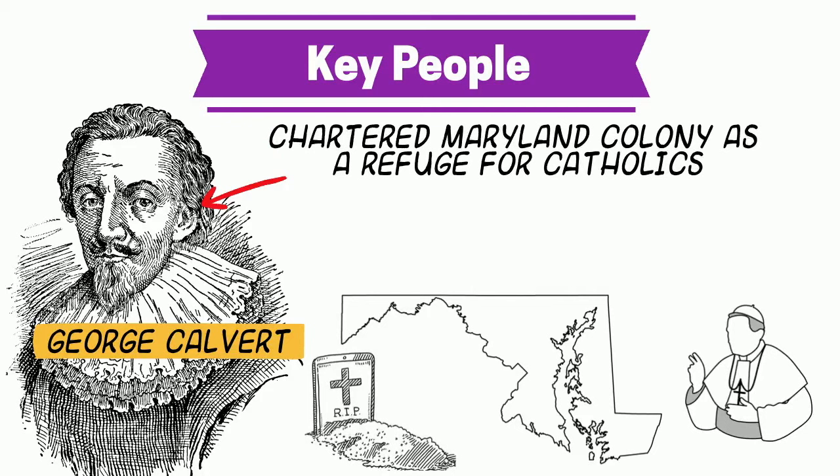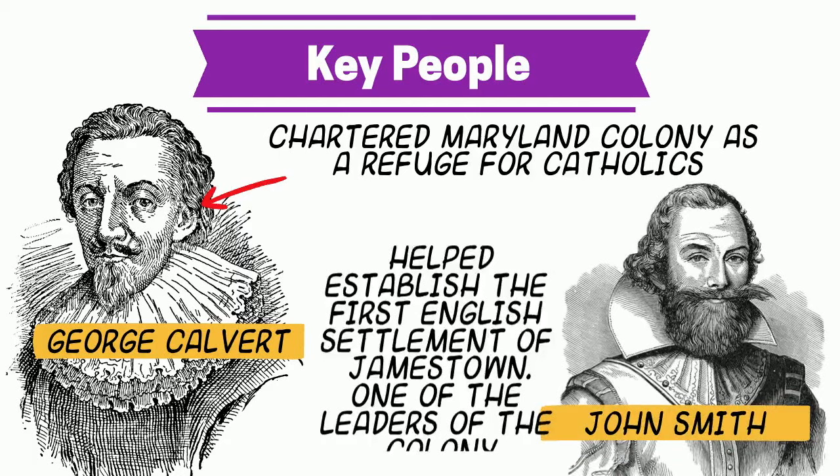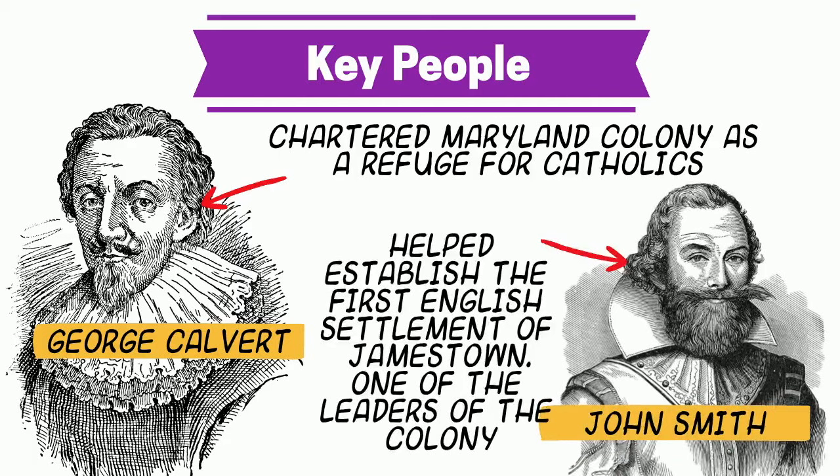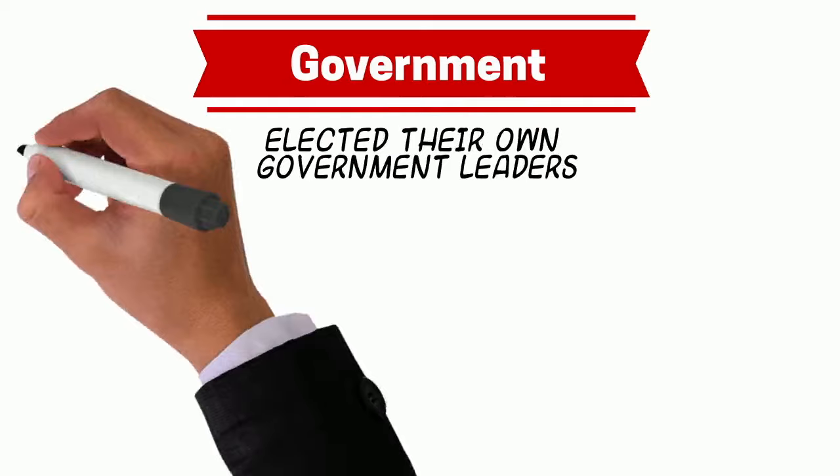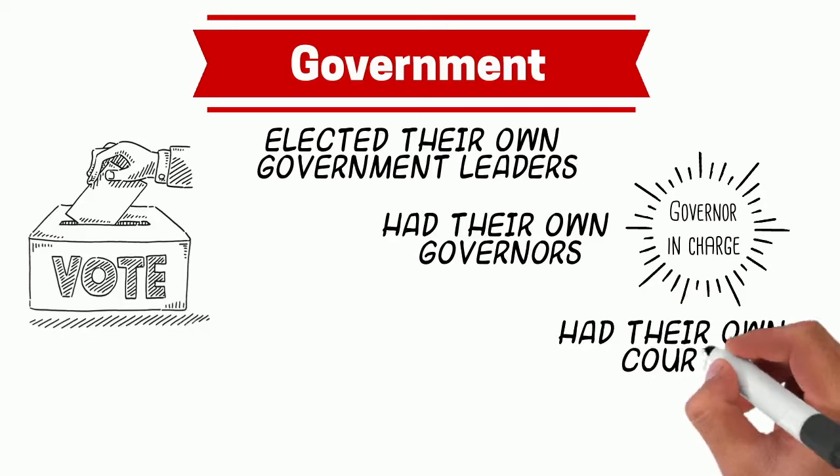Another key person is John Smith — yes, the John Smith from the story of Pocahontas. He was real and he helped establish the first English settlement of Jamestown. He was a tough leader, which was needed for Jamestown to survive, but nobody really liked him. He was a terrible liar and most of his accounts were very exaggerated or even fabricated. The Southern Colonies elected their own government leaders, had their own governors to run the colonies, and had their own courts to rule on issues in the south.